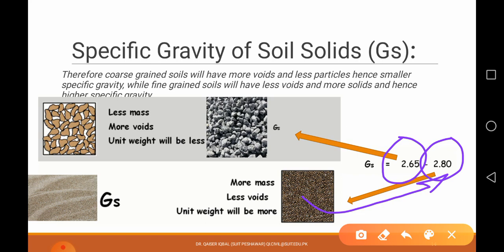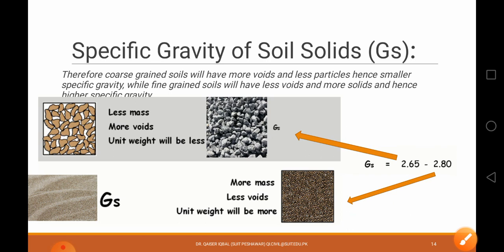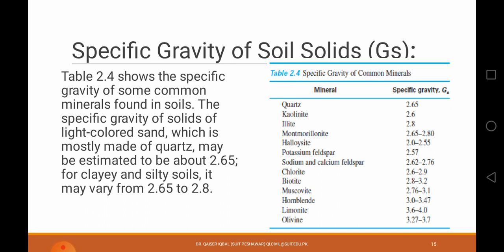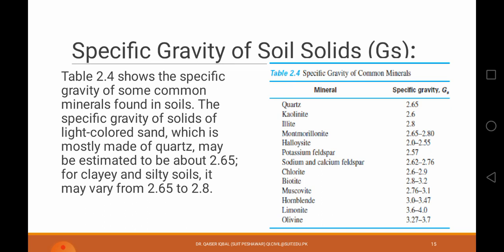The specific gravity of soil solids is typically around 2.8. The specific gravity of soil particles is given for various minerals which can be found in clay soils — quartz, illites, etc. This specific gravity is given in a table, covering everything from quartz to olivine. That's all from this lecture. In the next tutorial we will discuss sieve analysis and particle size distribution. Thank you very much.